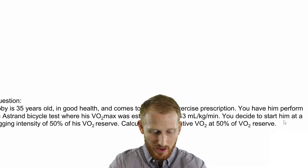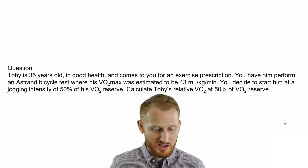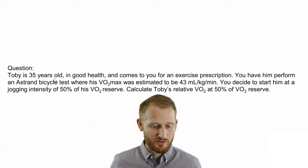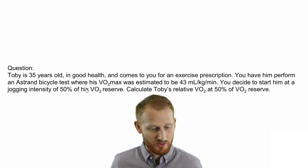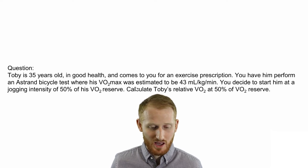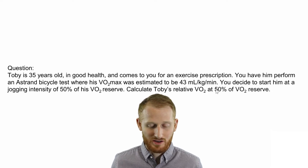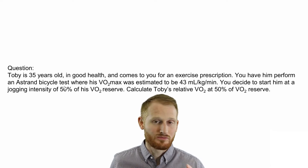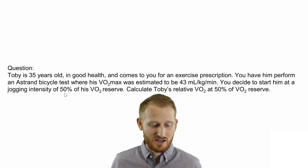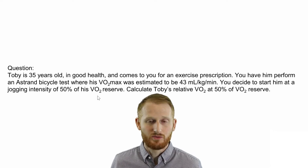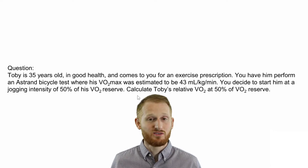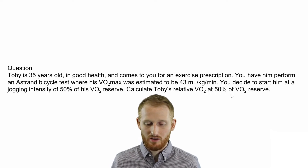So let's start with a question that can help us frame this. Toby is 35 years old, in good health, and comes to you for an exercise prescription. You have him perform an Osherin bicycle test, which is an estimated test for VO2 max, and you estimate his VO2 max to be 43 milliliters of oxygen per kilogram of body mass per minute. You decide to start him at a jogging intensity of 50% of his VO2 reserve, so you need to calculate his VO2 at 50% of his VO2 reserve.